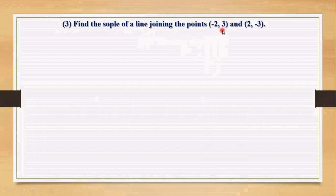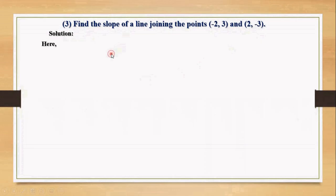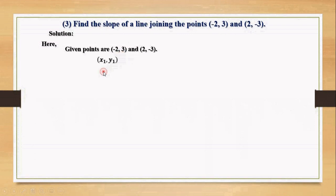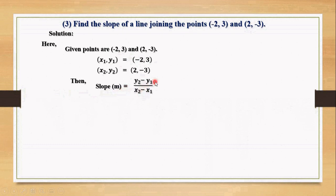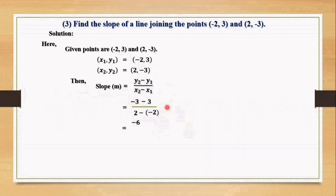Example 3: Find the slope of the line joining the points (minus 2, 3) and (2, minus 3). Let x1 equals minus 2, y1 equals 3 and x2 equals 2, y2 equals minus 3. Using slope m equals (y2 minus y1) by (x2 minus x1): numerator is minus 3 minus 3 equals minus 6, denominator is 2 minus (minus 2) equals 4. So slope equals minus 6 by 4 equals minus 3 by 2.